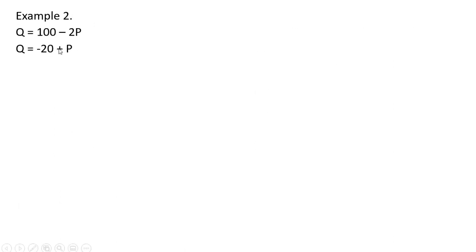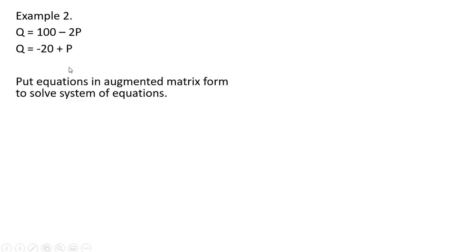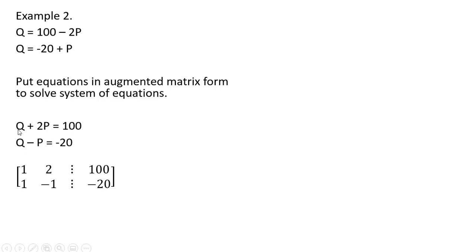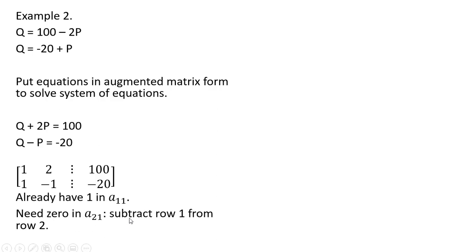Let's do another example — a slightly different supply and demand problem. Putting the equations in augmented matrix form: moving the constants to one side, the variables to the other, and plugging in the coefficients into the matrix. We already have a 1 in row 1, column 1, so we need to get a 0 beneath it by subtracting row 1 from row 2. So 1 minus 1 is 0; minus 1 minus 2 is minus 3; and minus 20 minus 100 is minus 120.